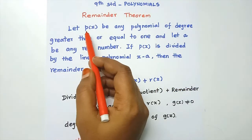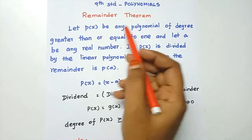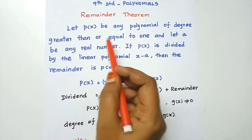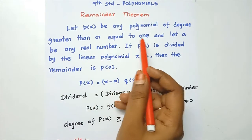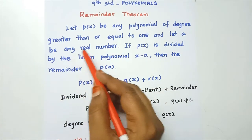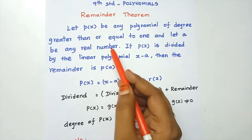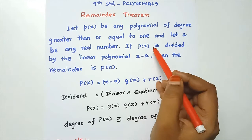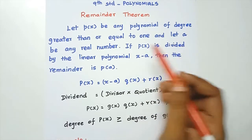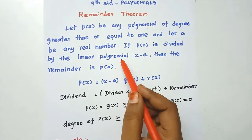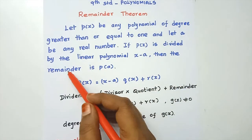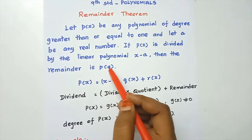Let p of x be any polynomial of degree greater than or equal to 1, and let a be any real number. If p of x is divided by the linear polynomial x minus a, then the remainder is p of a.